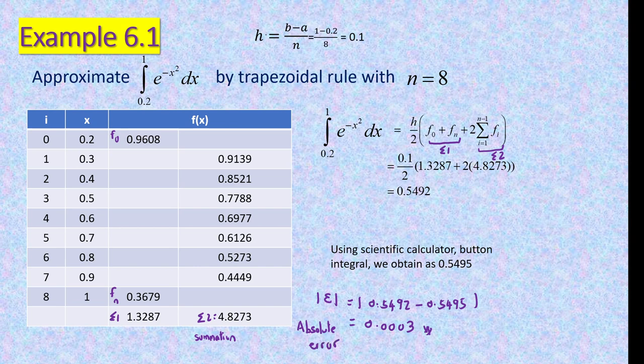The trapezoidal rule is not in the syllabus, but it's better to understand it before proceeding to Simpson's one-third, because there is continuity from trapezoidal → Simpson's one-third → Simpson's three-eighths. Do you have any questions before I proceed to Simpson's one-third?